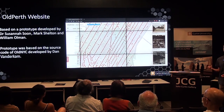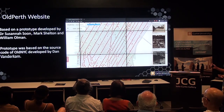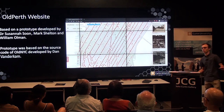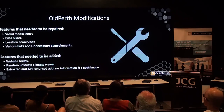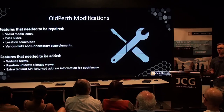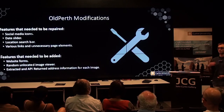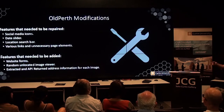The Old Perth website was based on a prototype developed in a previous Hive internship, which in turn was based on the source code of Old NYC, developed by Dan Vandekam. Old NYC does almost the exact same thing as Old Perth, except it operates in New York City — red dots you can click to display images from around the city. To port this to Perth, we needed to fix social media icons that weren't loading, update the date slider which was limited to images only up to year 2000, and fix the location search bar which was centered on New York City.